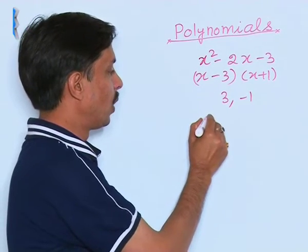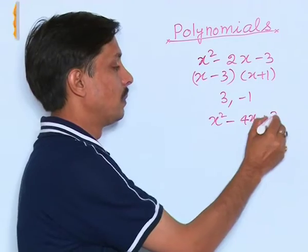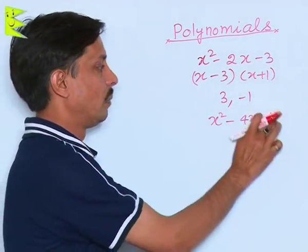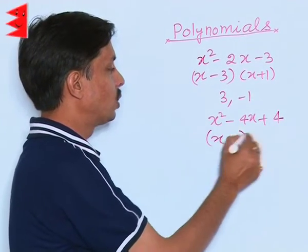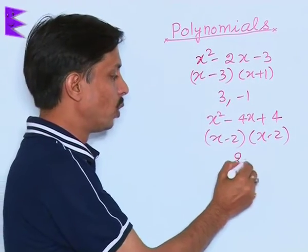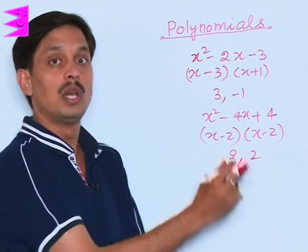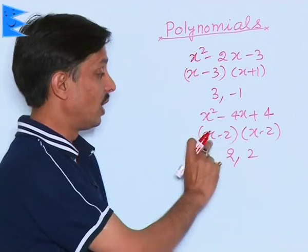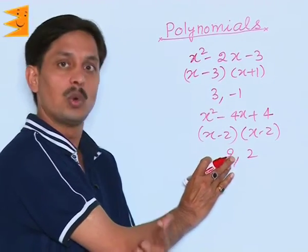But, if I take any other polynomial like x square minus 4x plus 4, what are the zeros of this? If I factorize in place of 2, we need to write 4. So, it will be x minus 2 into x minus 2. It has two zeros. These are 2 and 2. So, it has equal zeros, repeated zeros or same zeros but it is a quadratic polynomial.